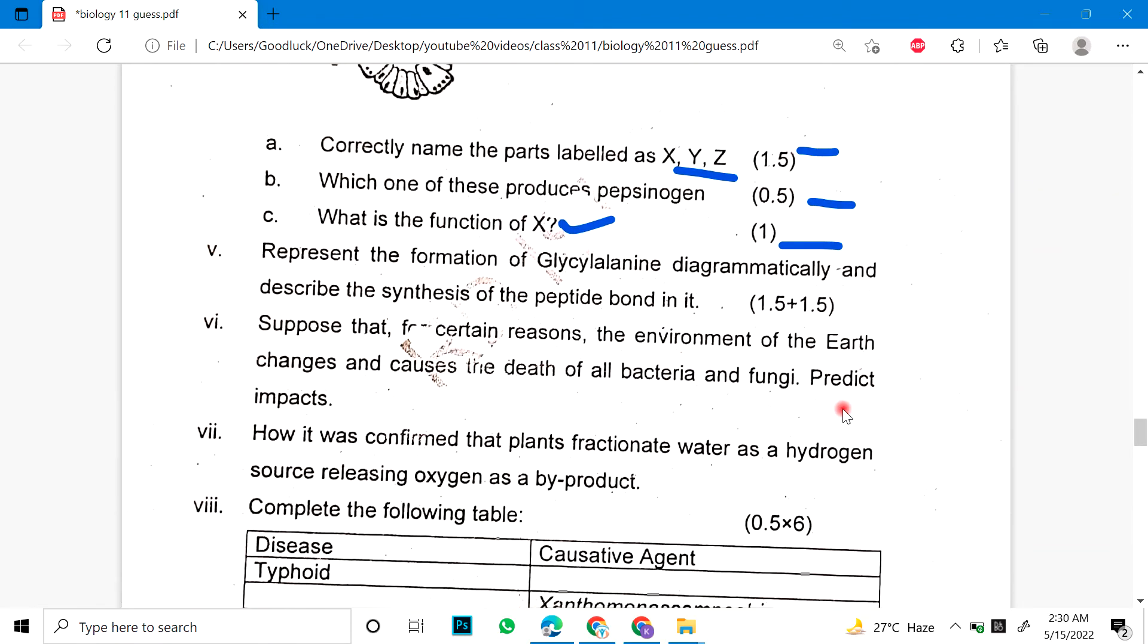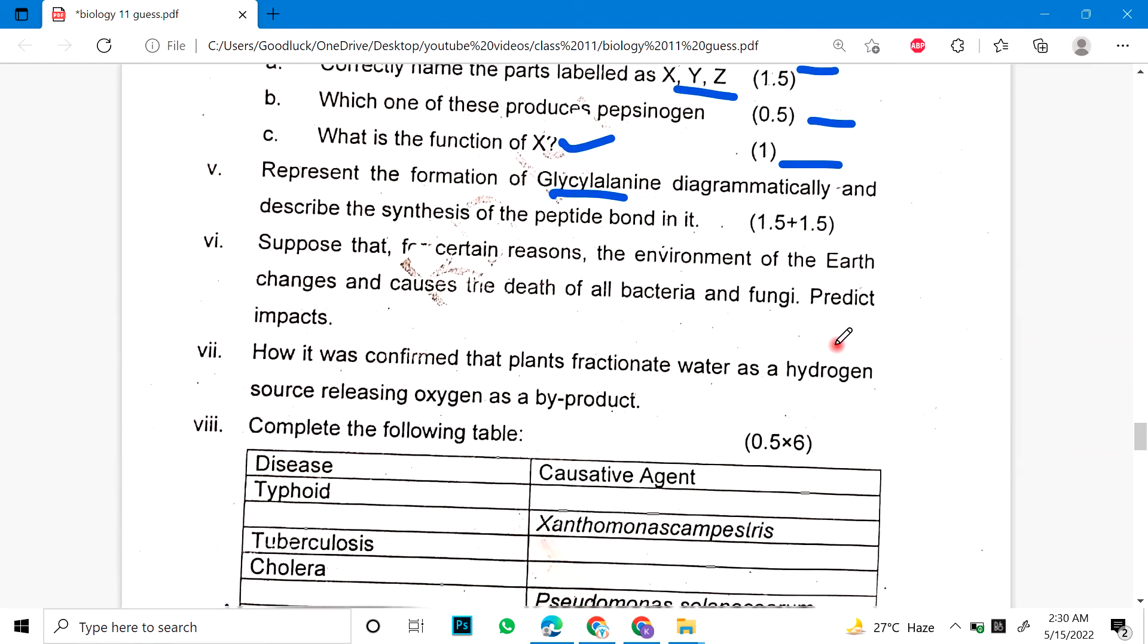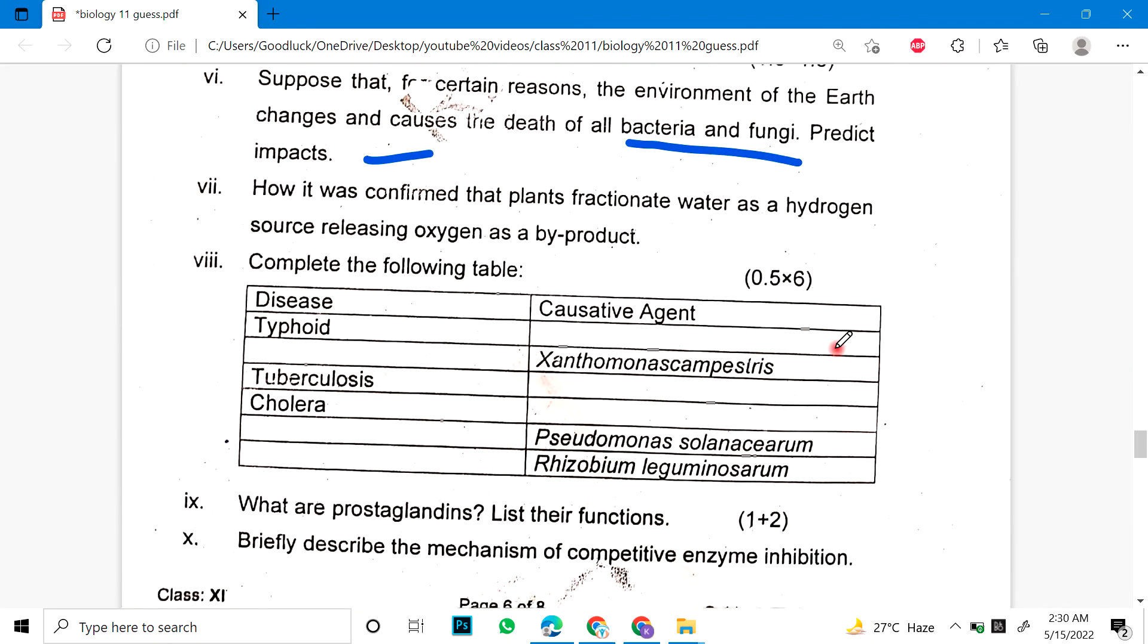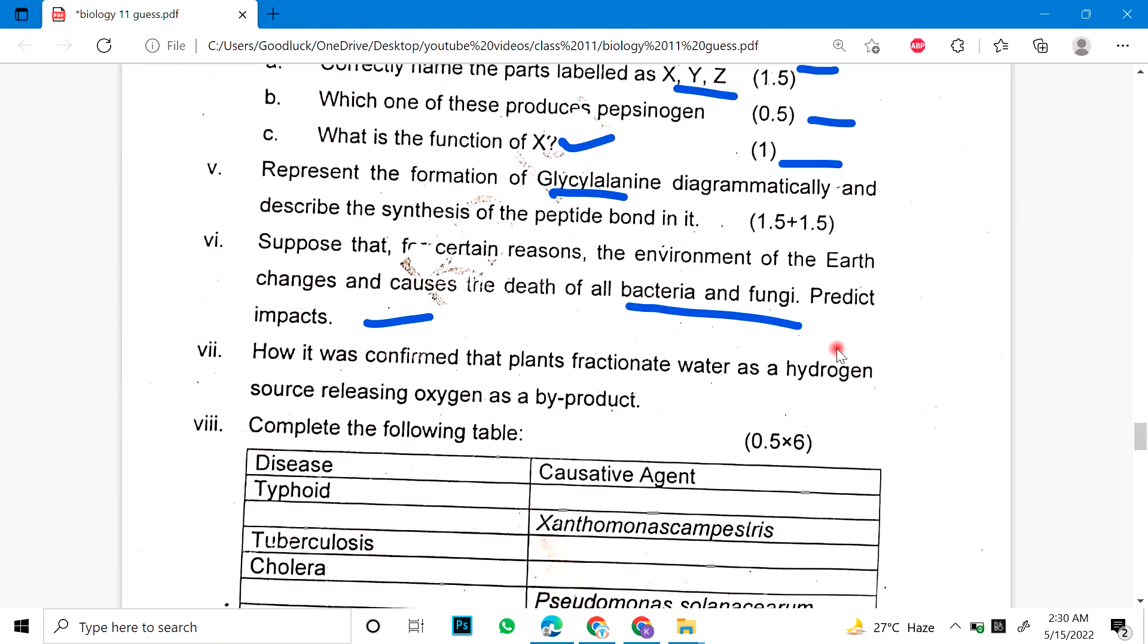Fifth: Result of the formation of glycylaline diagrammatically and describe the senses of the peptide bond. My main subject is math physics so you don't have to know the pronunciation of your subject accordingly. Sixth: Suppose for certain reasons the environment of the earth changes and causes the death of all bacteria and fungi. Predict the impact.